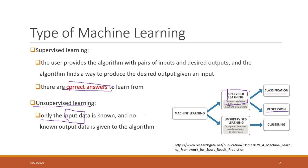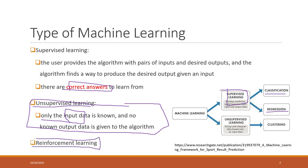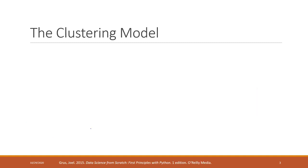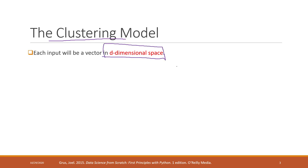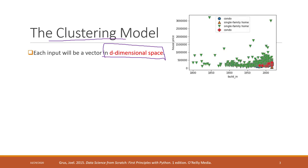Unsupervised machine learning is a very important technique. We also have reinforcement learning, which we don't have time to cover this semester. For unsupervised machine learning, the most common format is clustering. In clustering, each input is a vector in an n-dimensional or d-dimensional space. For example, we might have house price and the year it was built as our two input dimensions.